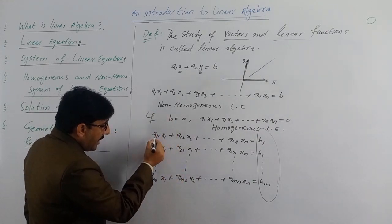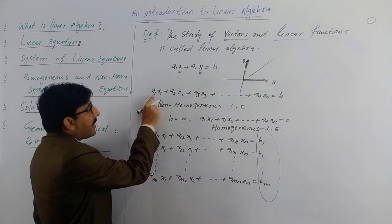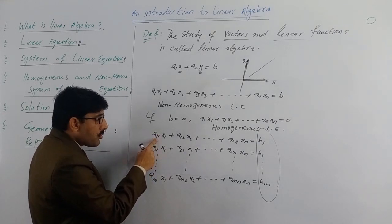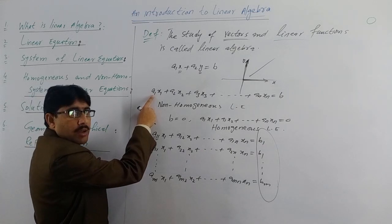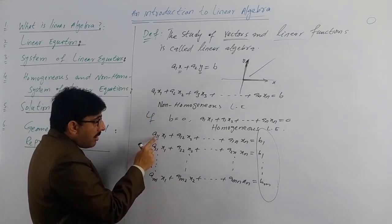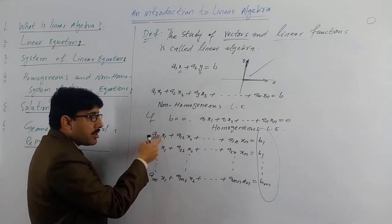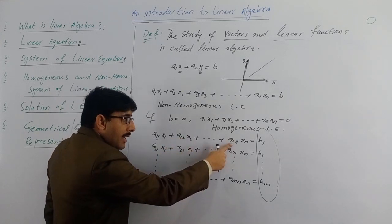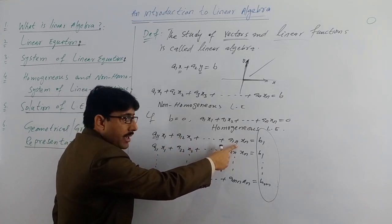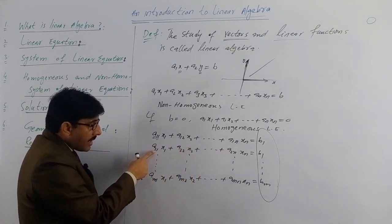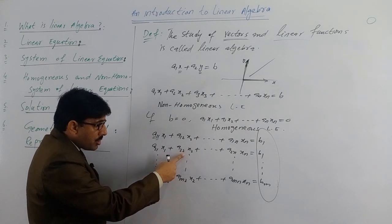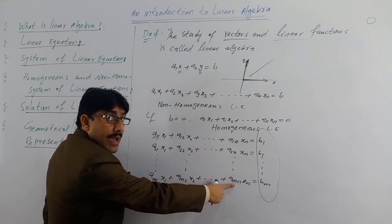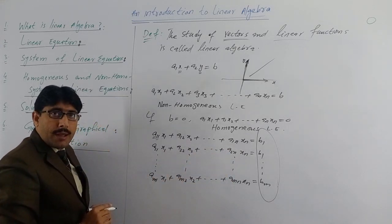یہاں subscript میں a one one کیوں لکھ رہے ہیں؟ کیونکہ یہ system of equations ہے۔ a11 means first equation, first position پہ یہ constant موجود ہے۔ a12 کا مطلب first equation, second position۔ Similarly a1n means first equation and nth position۔ Second equation میں a21 means second equation first position، a22 means second equation second position، اور similarly amn means m-th equation and n-th position۔